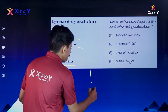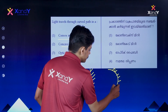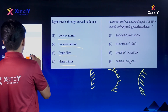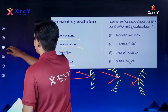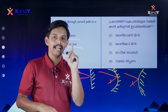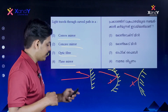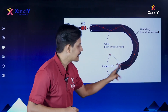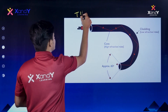We have three types of mirrors: plain mirror, concave mirror, and convex mirror. We have already learned about reflection of light. If we consider light going in a straight line, we can look at optic fiber. In optic fiber, light travels through a curved path using the Total Internal Reflection process.